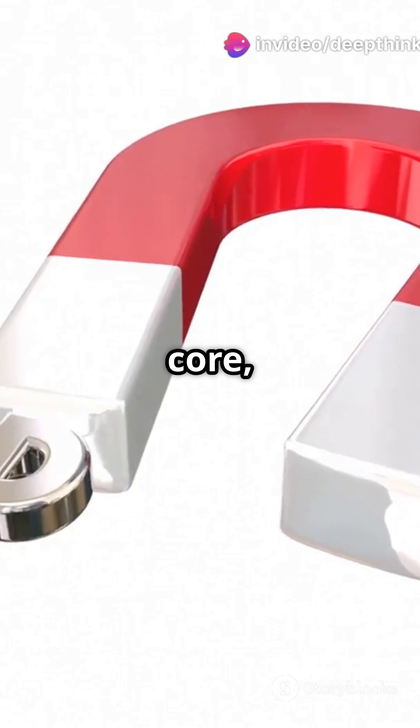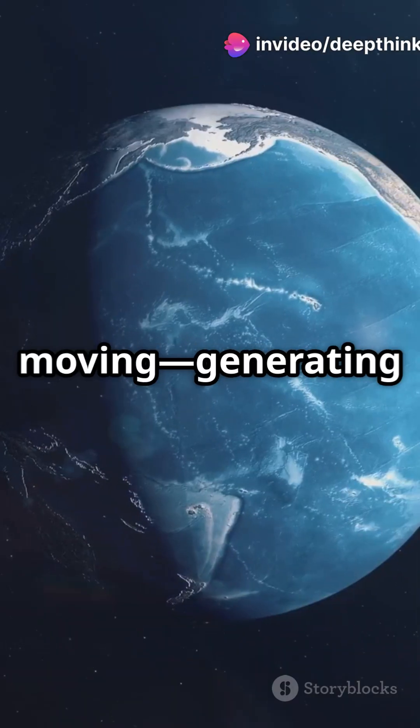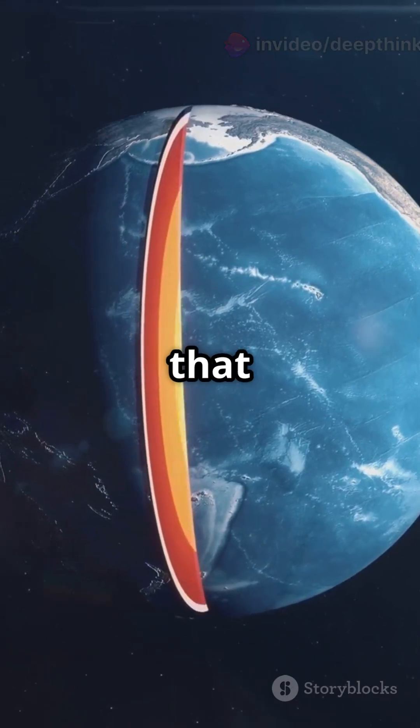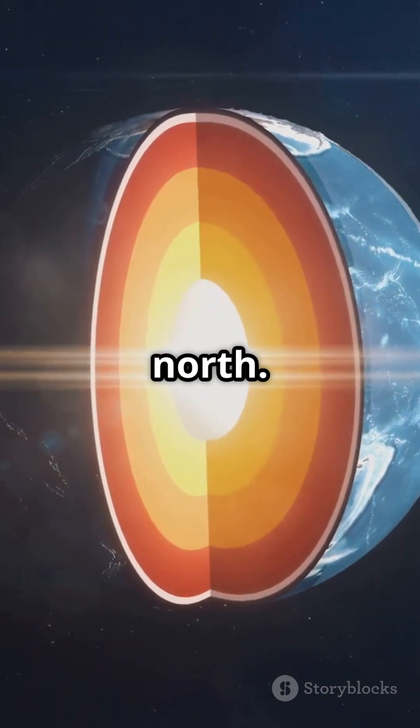Deep in its molten iron core, charged particles are constantly moving, generating a magnetic field that protects us from solar radiation and helps your compass point north.